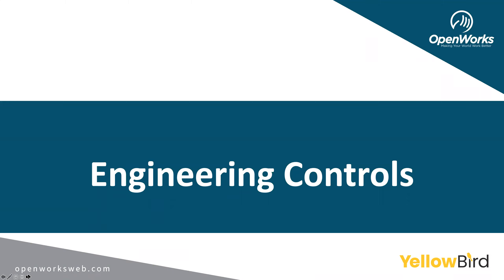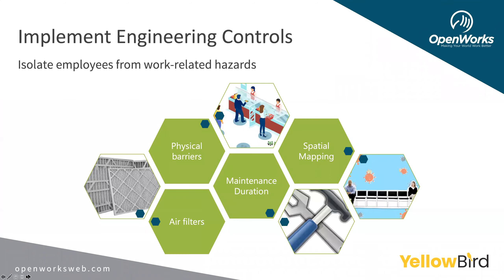Engineering controls are physical modifications to a process that decrease or eliminate risk for employees. Things that reduce hazards — some engineering controls can actually engineer out the hazard totally. Some of these controls may consist of physical barriers, such as plexiglass in front of a receptionist's office, or some type of cordoning off for traffic flow. Physical barriers are one of the engineering controls we now see post-COVID.